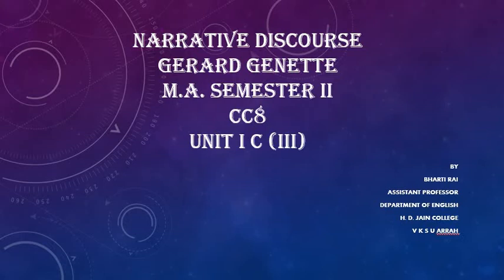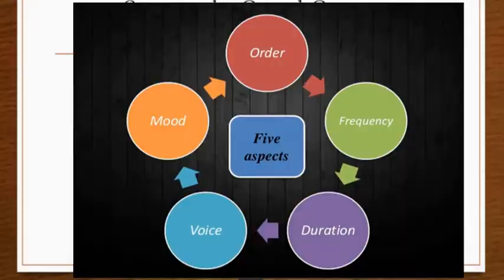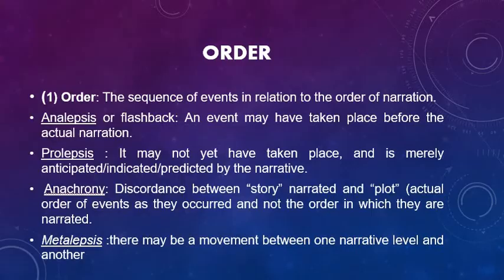Now in the previous video, we have seen who was Gerard Genette and what were his basic contributions. In this video, we will be dealing with the 5 aspects of his narrative discourse which are order, frequency, duration, voice and mood. Gerard Genette thought that these 5 aspects are the most important aspects that make up a narrative discourse.